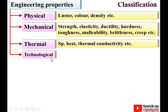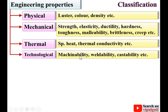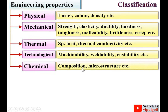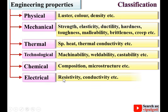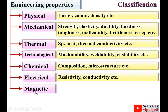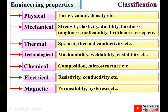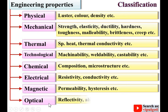Next, technological properties like machinability, weldability, castability, etc. Next, chemical properties — composition, microstructures, etc. Next, electrical properties — resistivity, conductivity, etc. Next, magnetic properties like permeability, hysteresis, etc. Next, optical properties like reflectivity, absorptivity, etc.